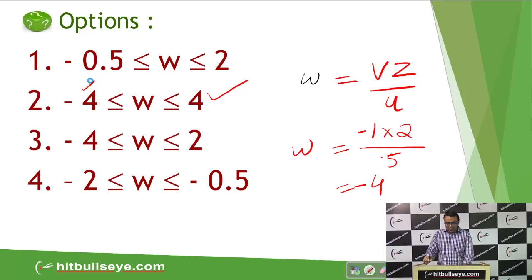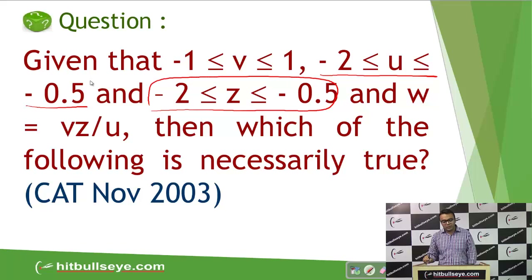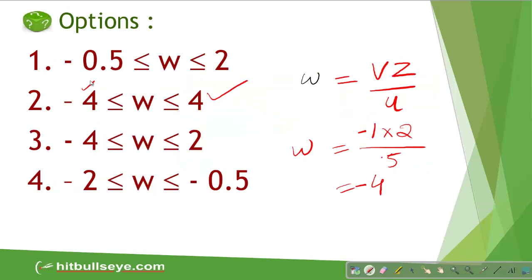Moving on to the second approach — this is a slightly trickier method. Notice that V is in the numerator and can be negative or positive. The minimum possible value of V is minus 1 and the maximum is 1, so the magnitude is 1 in both cases. If I want to find the minimum and maximum value of W, I need to look for an option where both the minimum and maximum magnitudes are the same.